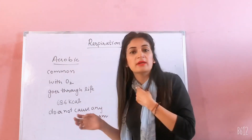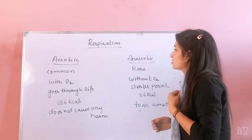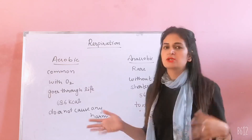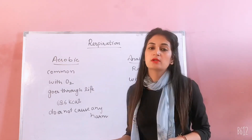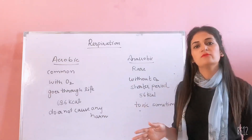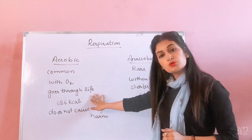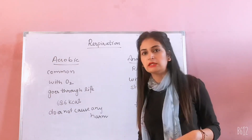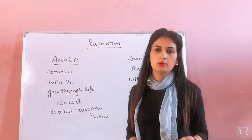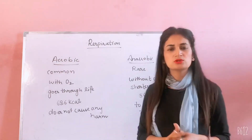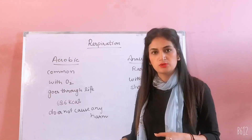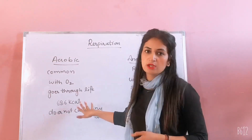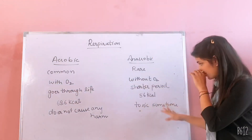So there is the difference between aerobic and anaerobic respiration. Aerobic respiration is very common, while anaerobic respiration is rare. Aerobic respiration is in the presence of oxygen, and anaerobic respiration is in the absence of oxygen. Aerobic respiration occurs throughout life, while anaerobic respiration occurs for a shorter period. Aerobic respiration will produce a lot of energy — about 686 kcal — whereas anaerobic respiration produces only about 56 kcal.